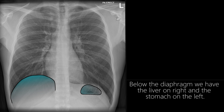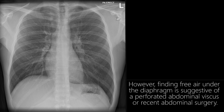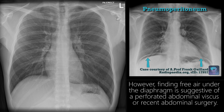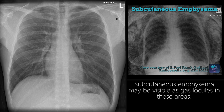Below the diaphragm we have the liver on the right and the stomach on the left. Air contained within the stomach is a normal finding. However, finding free air under the diaphragm is suggestive of a perforated abdominal viscus or recent abdominal surgery. The chest wall, breast tissue, shoulders, and lower neck can often be seen on a chest film. Subcutaneous emphysema may be visible as gas locules in these areas.